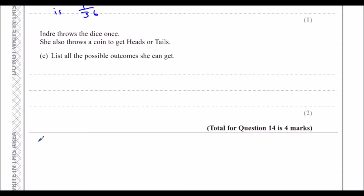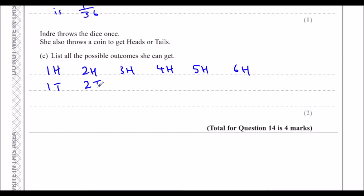Indra throws the dice once and also throws a coin to get heads or tails. List all possible outcomes. We have 1 head, 2 head, 3 head, 4 head, 5 head, 6 head, and all the numbers on the dice with a tail as well. You can get 1 with a head or a tail, 2 with a head or a tail, 3 with a head or a tail, and so on.